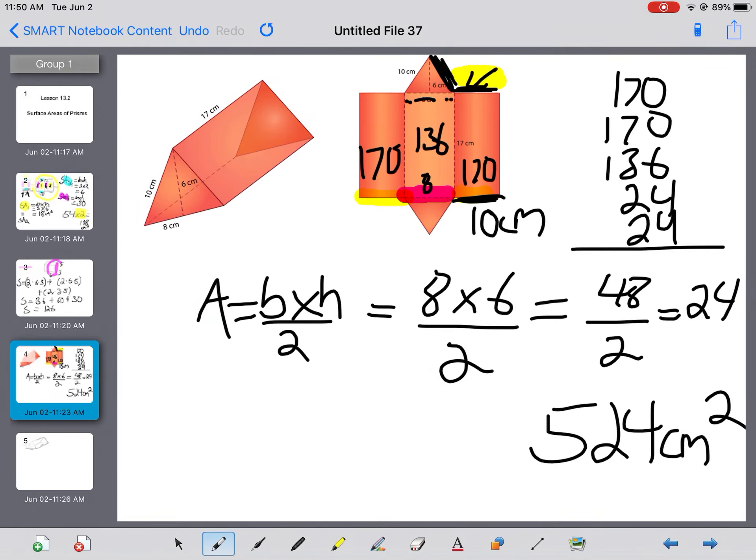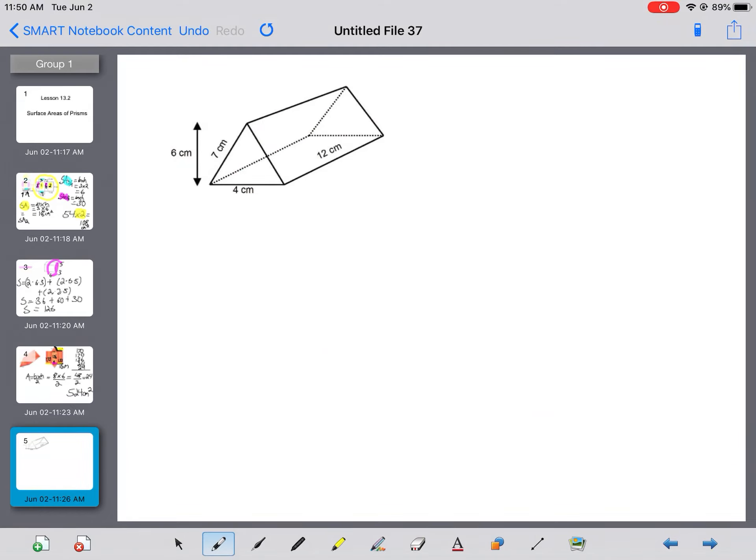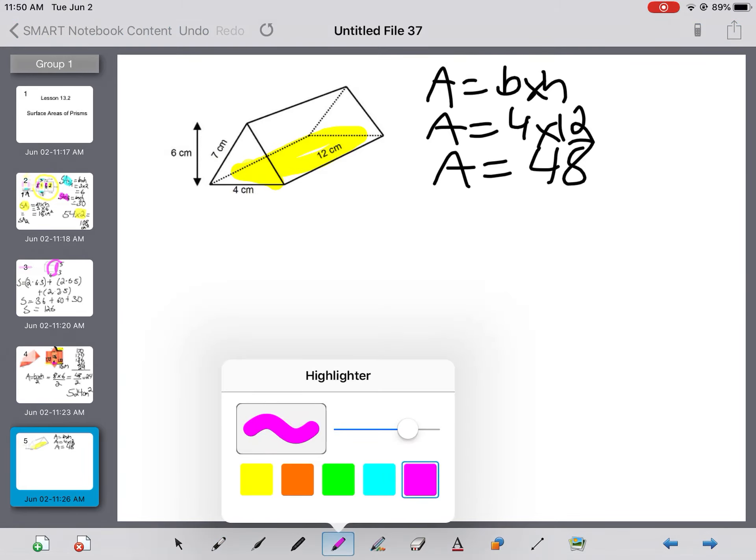Let's do one more example with a triangular prism. In this one, you haven't been given the net, so you need to visualize it. The first thing I notice is I can figure out this bottom rectangle here. I can do the base times the height, area equals 4 times 12. So I get the area equals 48 for that rectangle.